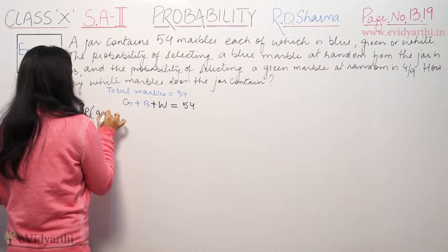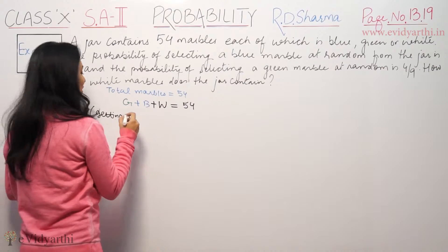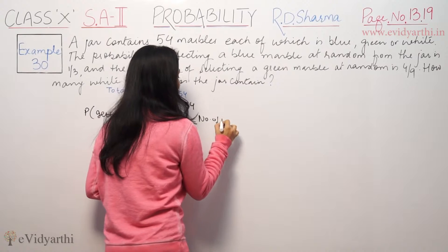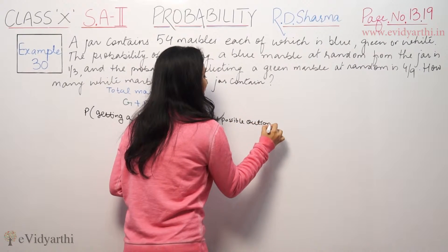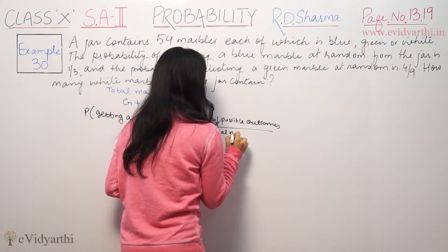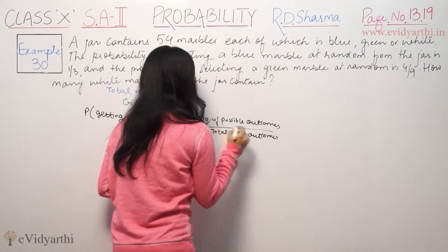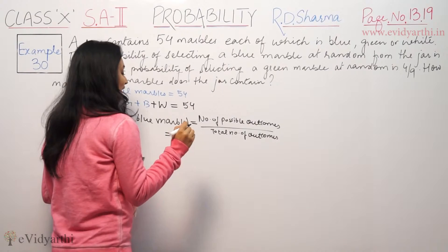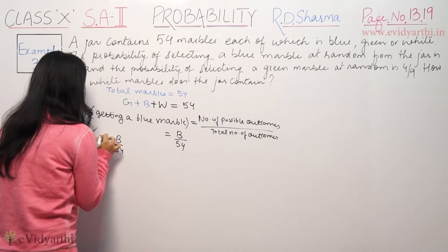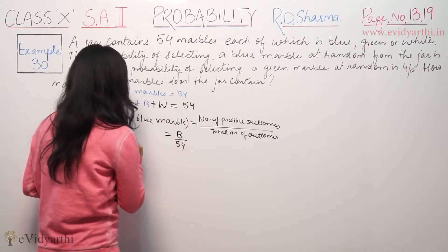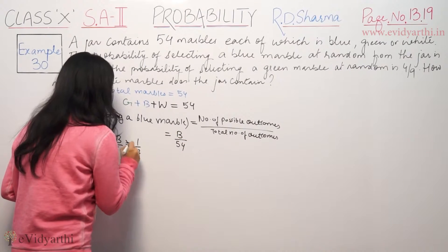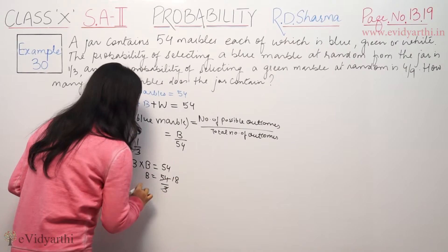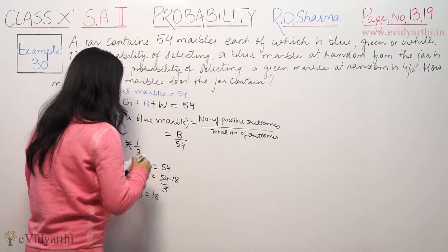So the probability of getting a blue marble, from this probability formula, number of favorable outcomes upon total number of outcomes. So total outcomes are 54. For blue case, we don't know the blue. Now we know that the blue probability is 1/3. So these are equal because this is the blue probability. Cross multiply, 3 times blue equals 54, so blue equals 54 by 3 equals 18. Blue marbles are 18.